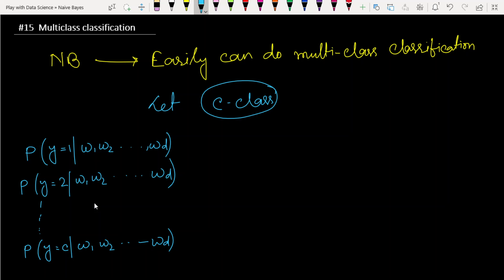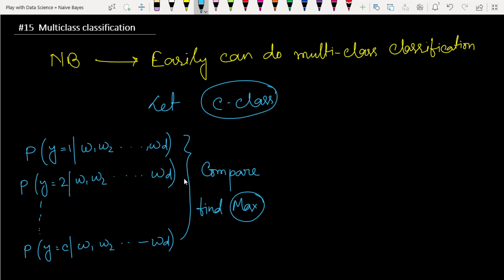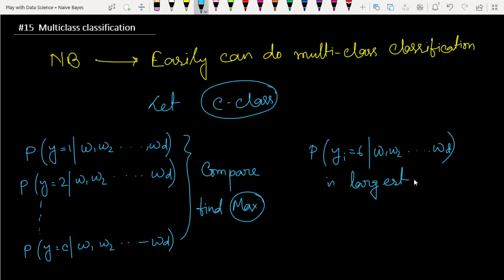After calculating all C probabilities, we compare them and find the maximum one among all the C probabilities. For example, suppose the probability of y_i equals 6 is the largest among all the class probabilities.